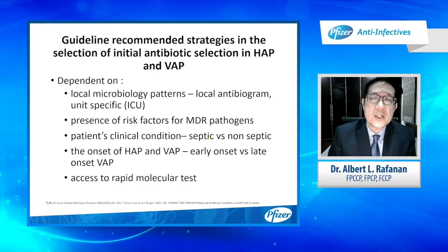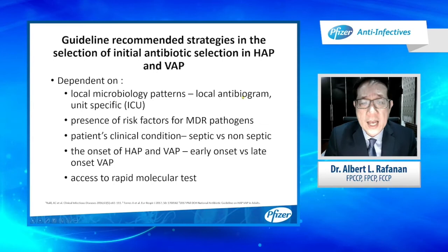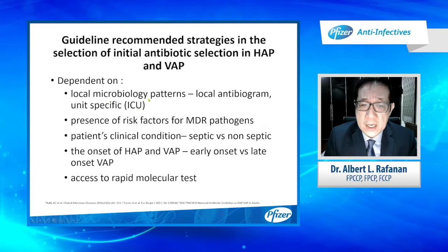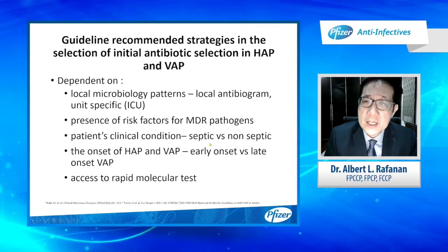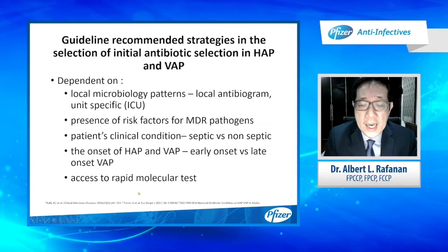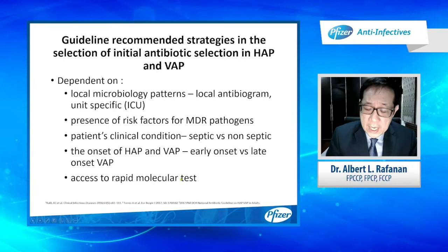Guideline-recommended strategies for initial antibiotic selection in HAP and VAP include: looking at our own local microbiological patterns and local antibiograms — ideally unit-specific, since the CCU, medical ICU, or neurocritical care unit may have different microbiological ecologies. We also look at presence of risk factors for MDR pathogens, clinical condition, whether the patient is septic, early versus late onset VAP, and whether we have access to rapid molecular PCR tests that can identify the organism and aid early de-escalation.